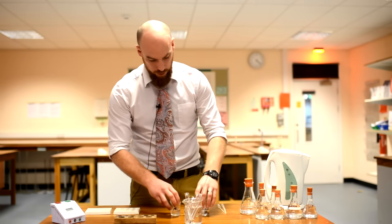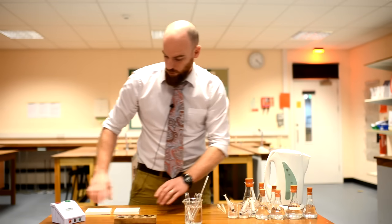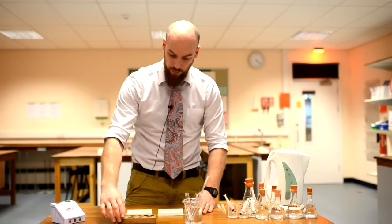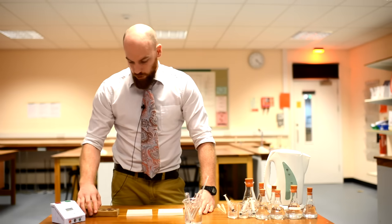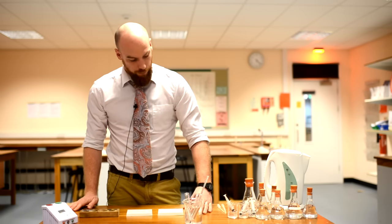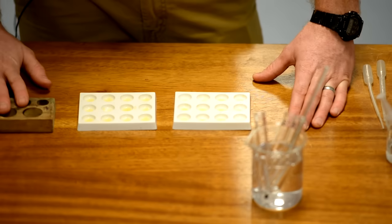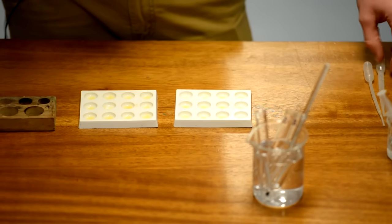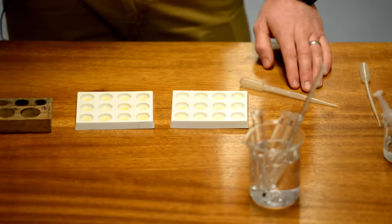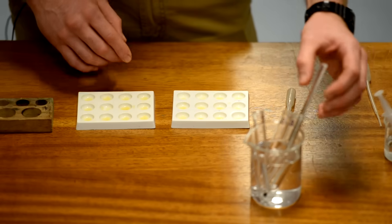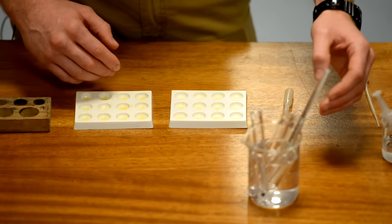And focus your attention now on your spotting tiles. You'll also need a test tube rack, a timer, and a pipette. We already have in our spotting tile the iodine solution which, if it turns black or dark purple, is a positive test for starch.